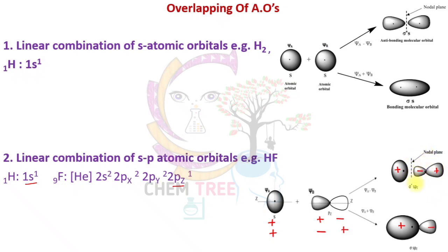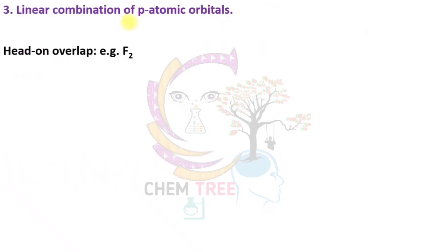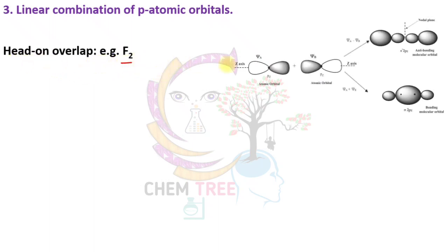If the signs are opposite (plus-minus-plus), an anti-bonding molecular orbital is formed, and a nodal plane is created. In pp overlapping, there are two possibilities. The first is head-on overlapping — for example in the chlorine molecule — where pz atomic orbitals overlap with each other along the axis and form sigma and sigma star bonding and anti-bonding molecular orbitals.